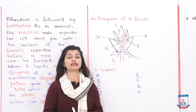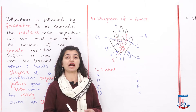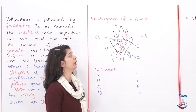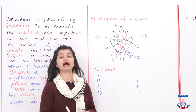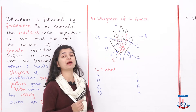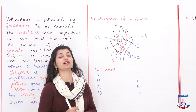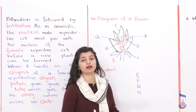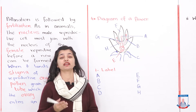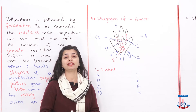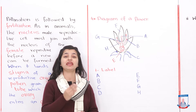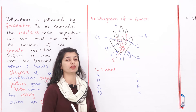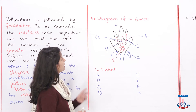Part 4 of your exercise requires you to look at a diagram of a flower and answer questions. Here we have a rough diagram of a flower and we have to identify different parts. You have to label parts A to H and write all the terms.